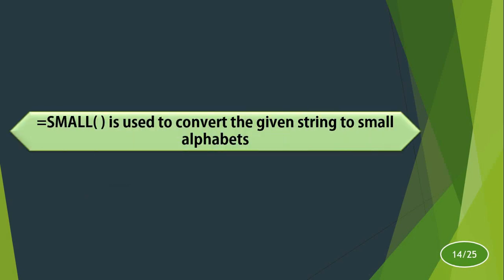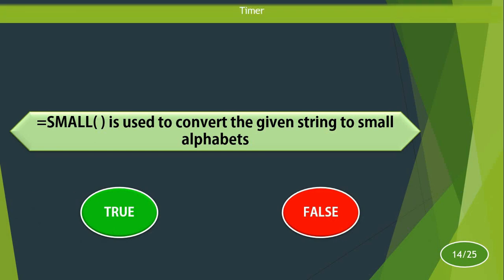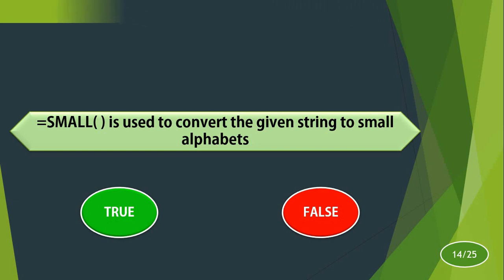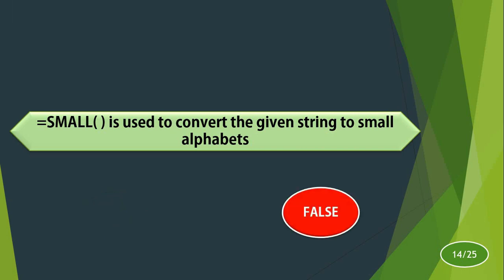The EQUAL SMALL function is used to convert the given string to small alphabets. Is it true or false? The answer is false. It is the LOWER function which is used to convert text into lowercase or small alphabets.